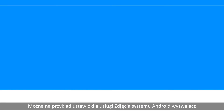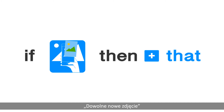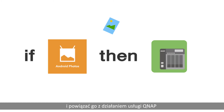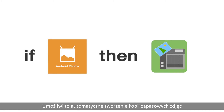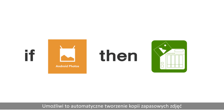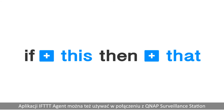For example, you can set the trigger on Android Photo Service as Any New Photo, and the action on QNAP Service as Download File from URL. Then you can automatically back up all your new photos from your Android devices to the QNAP NAS.